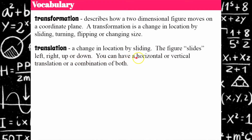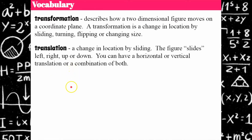The figure slides left or right or up or down. You could have a horizontal or a vertical translation, or a combination of both — moving to the right, to the left, up, down, or a combination: left and up, right and down, left and down, or right and up.